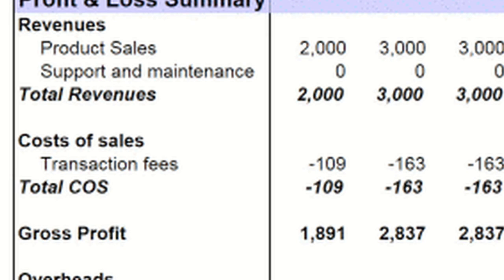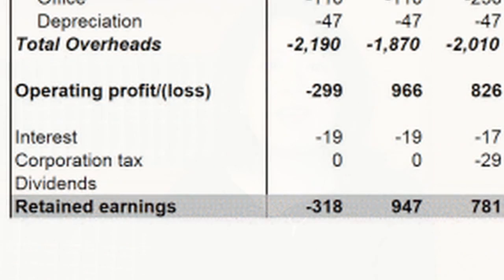And then you would arrive at net operating income. Most companies will actually have another operating income before interest and before taxes. So then your next categories would be interest on debt and your provision for income taxes. And then finally, you would arrive at your net income.